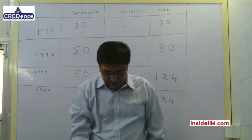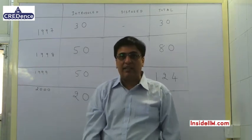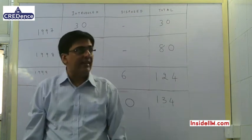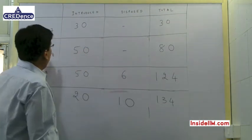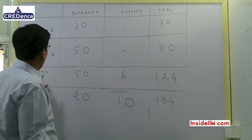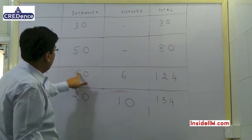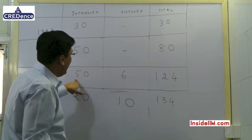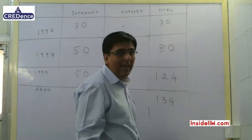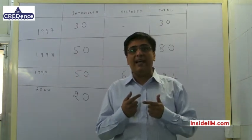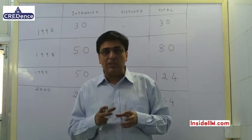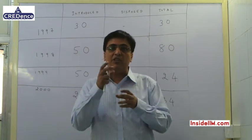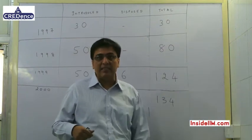The second question also concerns Naya Mixture Grinders: how many Naya Mixture Grinders were purchased in 1999? Looking at the table already created, we already have the answer — 50 Naya Mixture Grinders were purchased in 1999. Both questions go hand in hand, and the information interpreted for question 1 also gives the answer to question 2.